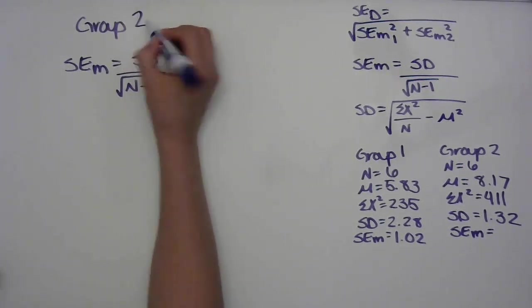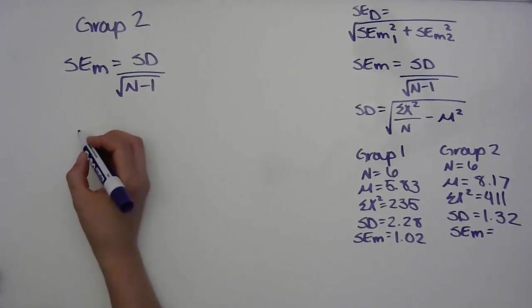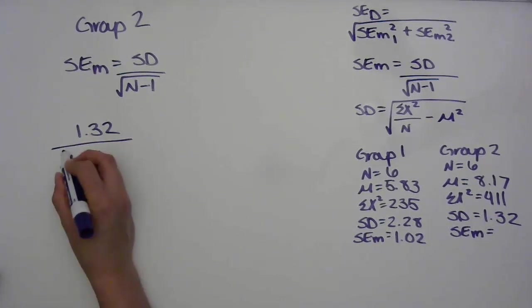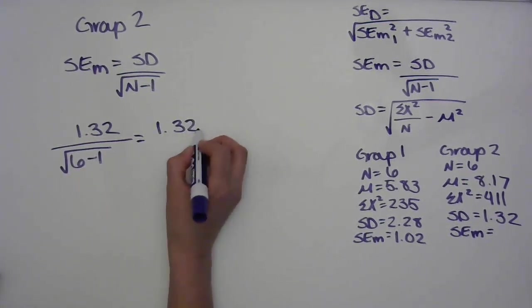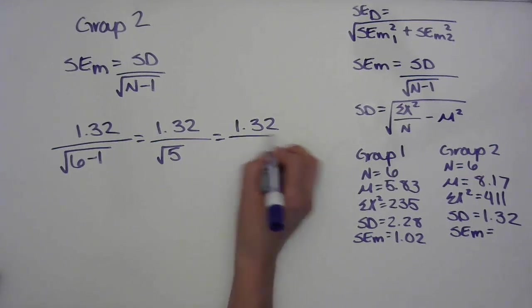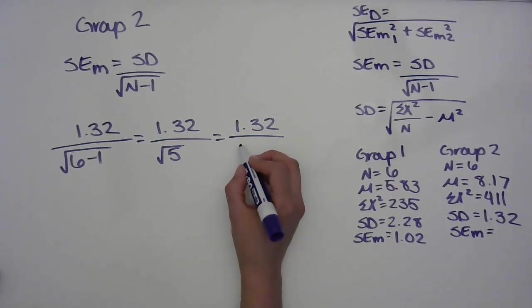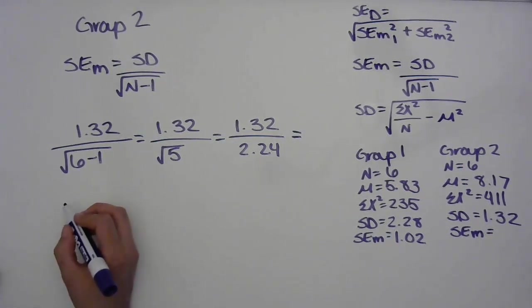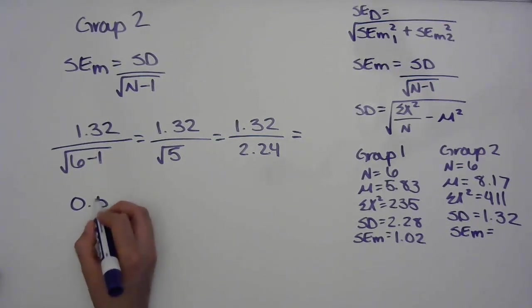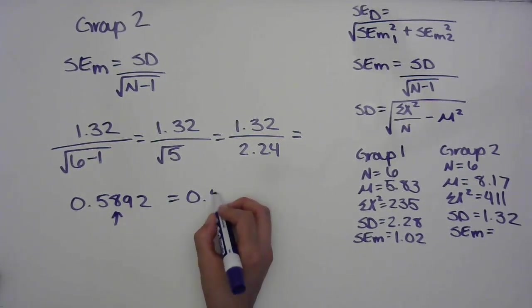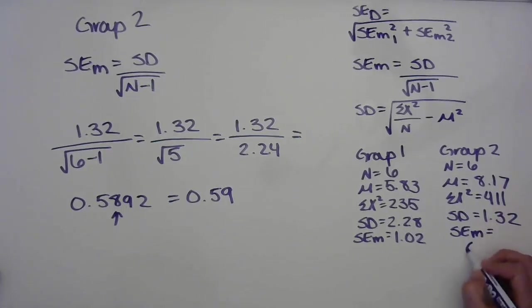Now let's do group two using the same formula. The standard deviation is 1.32 over the square root of 6 minus 1, which is the square root of 5, or 2.24. Dividing 1.32 by 2.24 gives us 0.5892, which rounds to 0.59 as the standard error of the mean for group two.